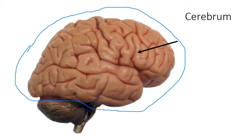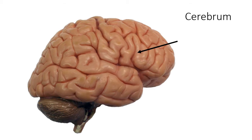Here's the cerebrum — that is one region of the brain. Another one is going to be the diencephalon. The third is the brain stem, and the fourth is the cerebellum.